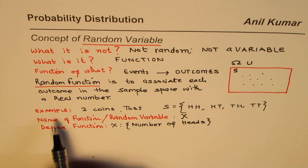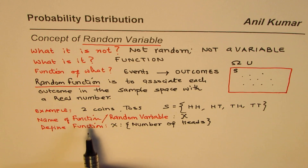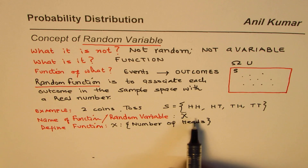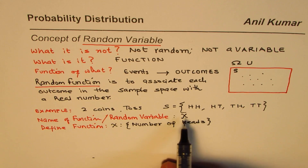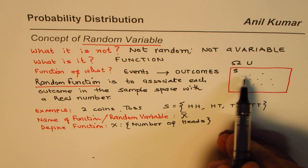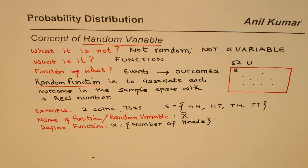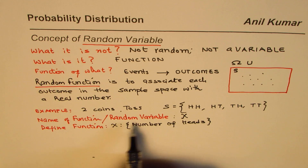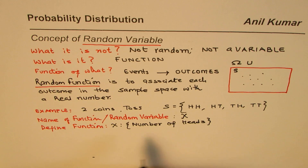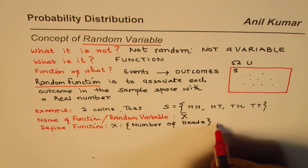A random variable should be written in a capital letter — could be X, could be Y, whatever — and then you have to define your function, that is, how you are going to associate this random variable with the set of outcomes. In this case I'm saying I will associate capital X as number of heads.